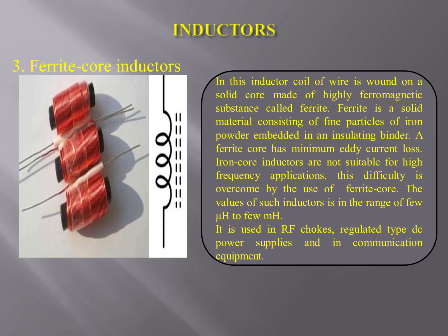Ferrite core inductors — you can see the figure and its symbol on the screen. In this inductor, a coil of wire is wound on a solid core made of a highly ferromagnetic substance called ferrite. Ferrite is a solid material consisting of fine particles of iron powder embedded in an insulating binder. A ferrite core has minimum eddy current loss. Iron core inductors are not suitable for high frequency applications; this difficulty is overcome by the use of ferrite core. The value of such inductors is in the range of a few microhenry to a few millihenry. It is used in RF chokes, regulated DC power supplies, and in communication equipment.